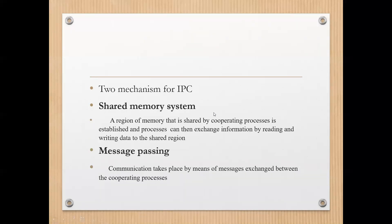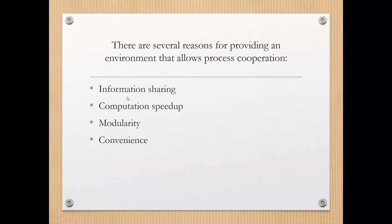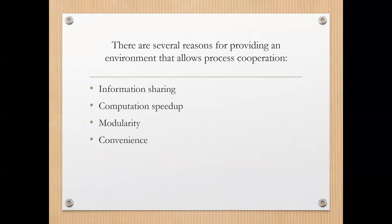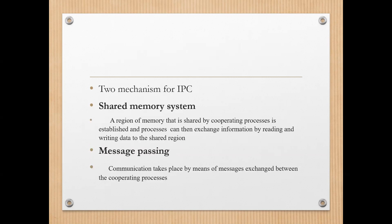There are two fundamental models of inter-process communication by which data or information can be shared between processes. We saw what types of processes exist — independent and cooperating — and the reasons why they cooperate. Now, the two fundamental models are: the shared memory system and the message passing system.